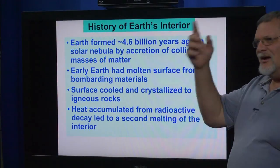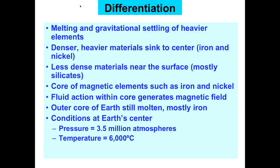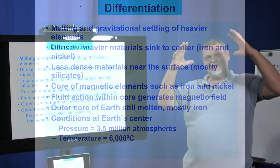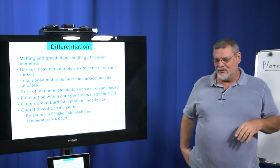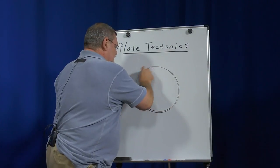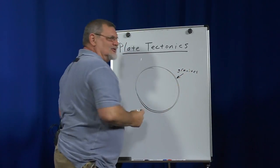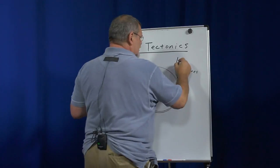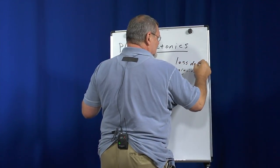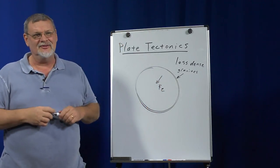So the surface cools on the outside and forms a crusty material. Gravitational settling — what happens is called differentiation. The lighter materials stay on the outside of the sphere, and as we go towards the center, the lighter weight materials like igneous rocks and granites are less dense, so they don't sink as much. The heavier materials, mostly iron, sink towards the center because of gravity.